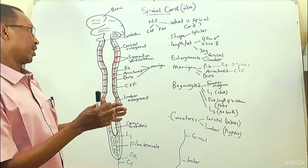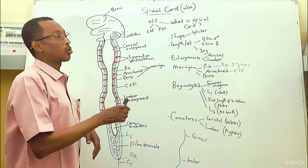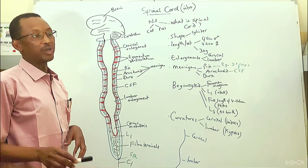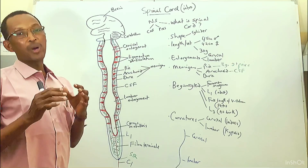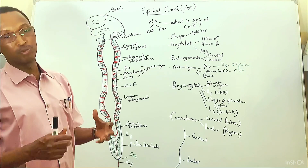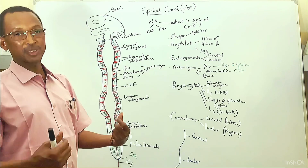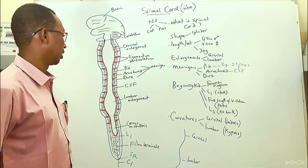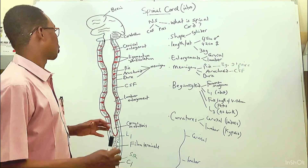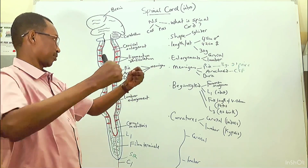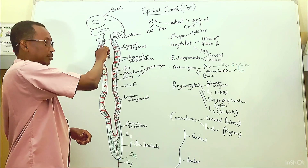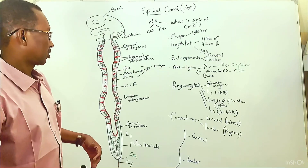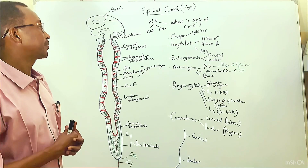The spinal cord has two major enlargements. These enlargements are found at the cervical region and at the lumbar region. The purpose of these enlargements is for the supply of the limbs. The upper limbs receive their nerve supply from the cervical region through the brachial plexus, and the lower limbs receive their nerve supply from the lumbosacral plexus. We have a cervical enlargement because of the brachial plexus and a lumbar enlargement because of the lumbosacral plexus.